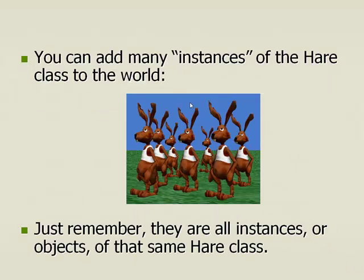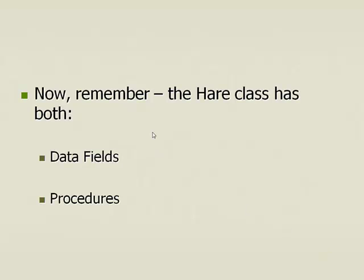You can add as many instances — as many Hare objects — as you want to in that world. Remember, the word instance and object are the same thing. So they're all instances or objects of that same Hare class in the world. Now remember, the Hare class has both data fields — variables, properties, data fields, same thing — and it's got procedures, methods.